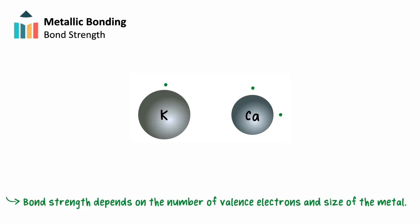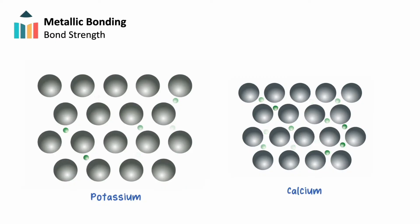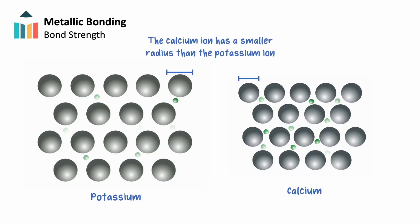For example, let's compare atoms of potassium and calcium. It's apparent that potassium has one valence electron, while calcium has two in its additional energy level. The valence electrons of these two atoms will delocalize, creating the potassium and calcium ions in a lattice structure. The calcium ion, Ca2+, is smaller than the potassium ion, K+.